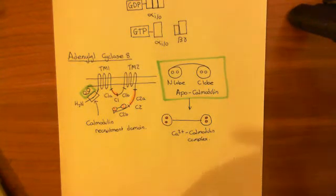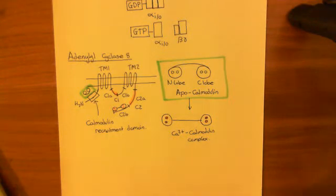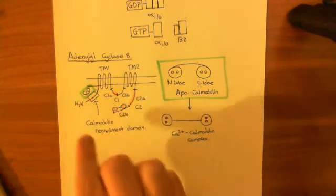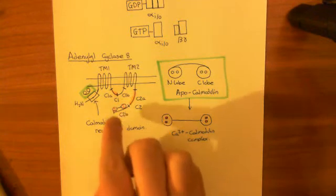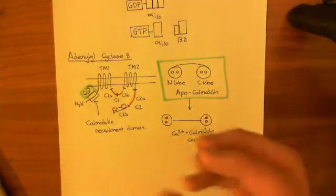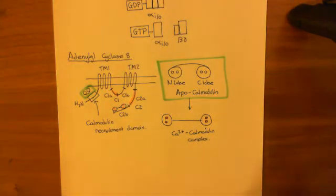C1A and C2A are the two halves of the enzyme. When these two parts come together and dimerize, you get the active adenylyl cyclase, which is the enzyme that turns ATP into cyclic AMP and pyrophosphate. So when calcium-calmodulin binds to C2B — transferred from the calmodulin recruitment domain — it potentiates the dimerization of C1A and C2A so that you get an active enzyme.